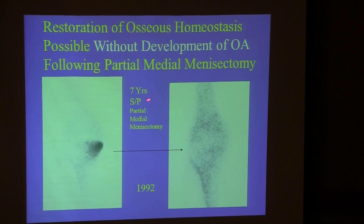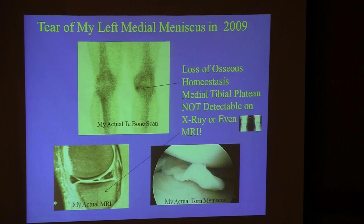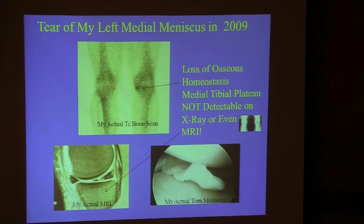What we found when we tracked this is that loss of homeostasis can resolve to normalcy, just like the patellofemoral pain cases, and without the development of osteoarthrosis. It just so happens that I tore my own medial meniscus in 2009 — these are my own images, my own bone scan, my own MRI, and my own torn meniscus at surgery.